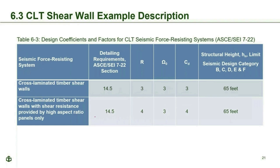The example uses the CLT shear wall system with R=3, Omega=3, and Cd=3. The panel aspect ratio (height to length) for this example is 2:1. While the system allows aspect ratios ranging from 2 to 4, all panels within a multi-panel CLT shear wall must have the same aspect ratio. The reference to Section 14.5 is important: the R factors are limited to systems meeting prescribed design and detailing requirements, and Section 14.5 of ASCE 7 references SPIDWIS 2021 for CLT shear wall system definitions.